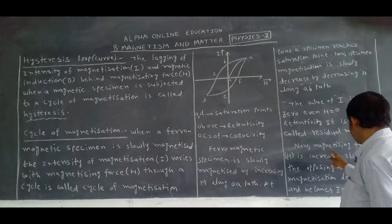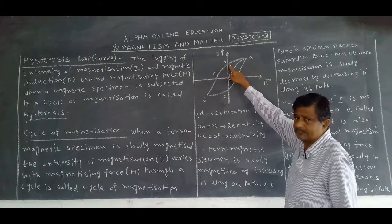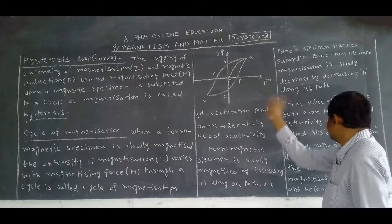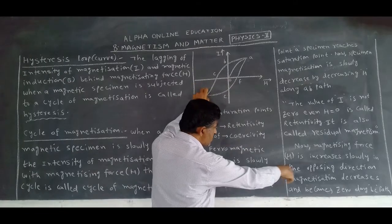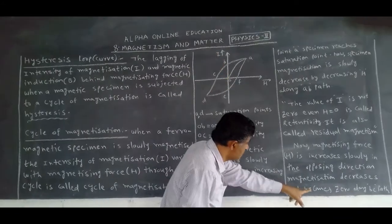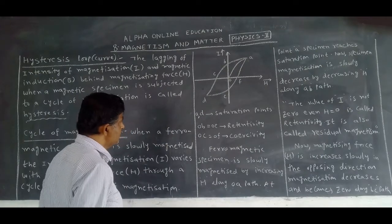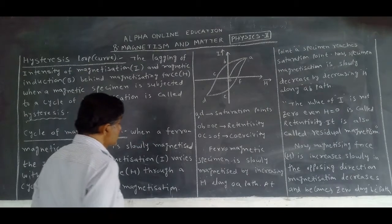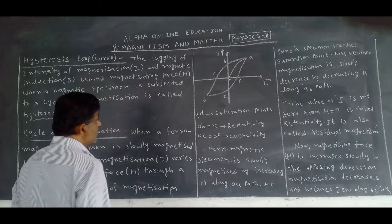Now the magnetizing force H is increased in the opposite direction. The magnetization I decreases and becomes zero along BC path. At point C, I is zero but H is not zero - this is called coercivity. Along OB: H is zero but I is not zero - retentivity. Along OC: I is zero but H is not zero - coercivity.